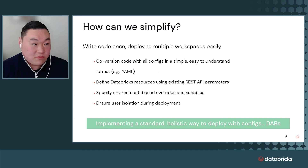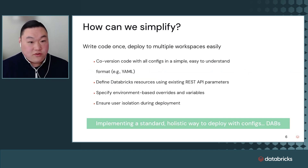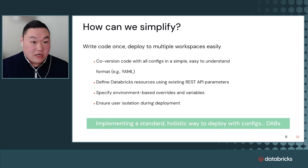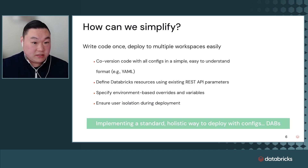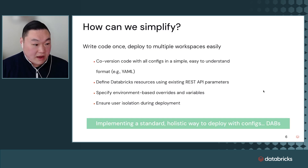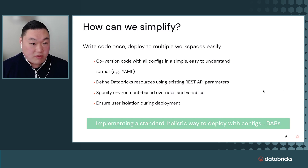So we thought about how we can simplify this process. We wanted to write the code once and deploy it to multiple workspaces easily. If you put your deployment process right next to your code, you can go across maybe your feature branch to your dev branch to your main branch or release branch, and go across multiple workspaces from dev to staging to production. Co-version your code with simple configuration files — that's why they're in YAML format.